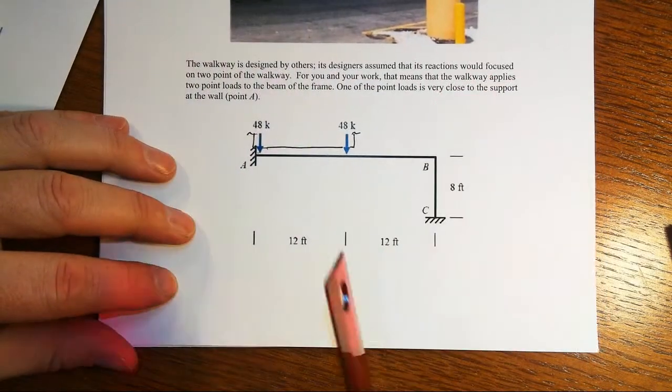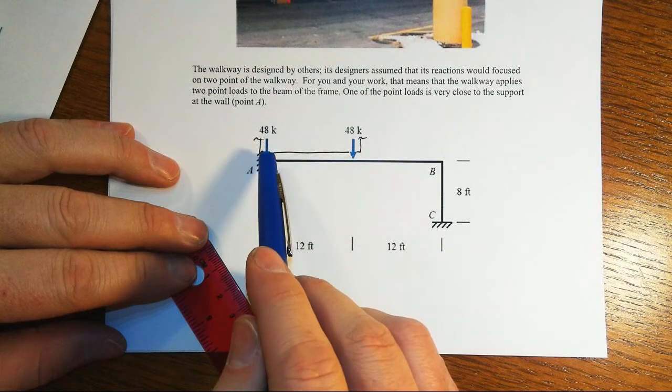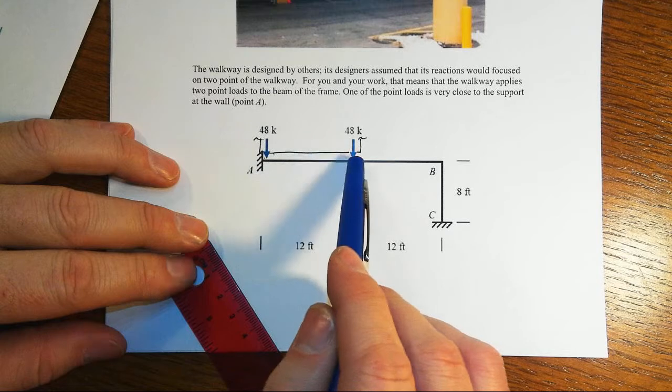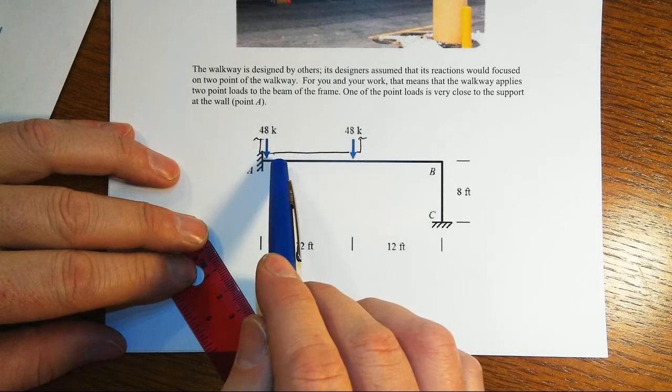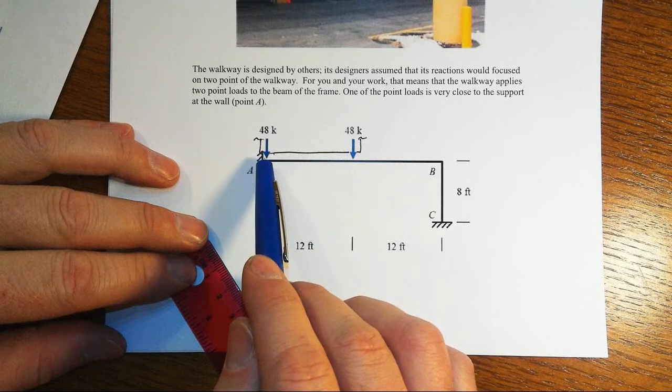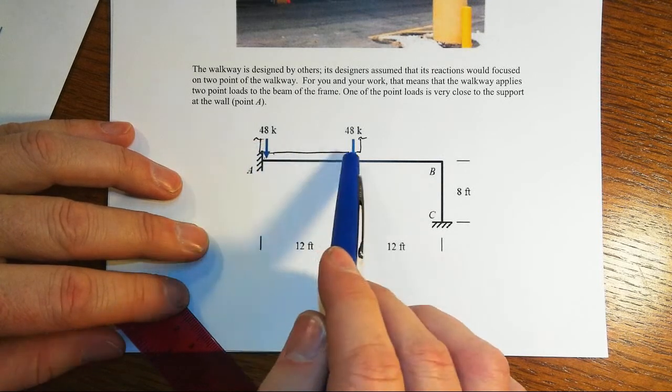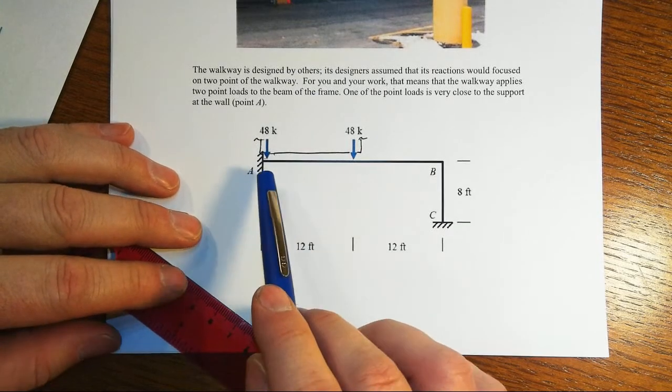The setup of the walkway is such that it only imposes reactions or really force effects to the beam at the connecting points which are at the mid-span at the far left right close to the support at that far left. Those reactions have been provided to us at 48 kips for a specific load case.